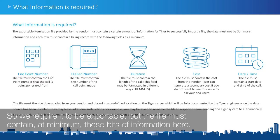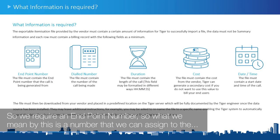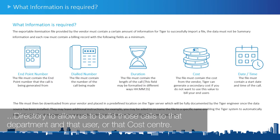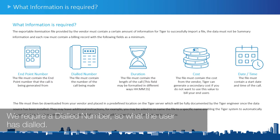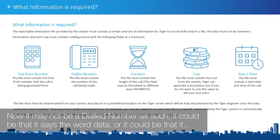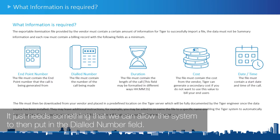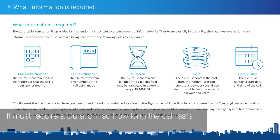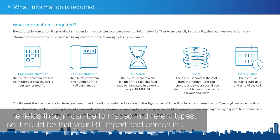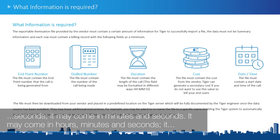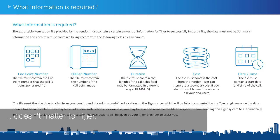We require the file to be exportable and it must contain at minimum these fields. First, we require an endpoint number — a number we can assign to the directory to bill those calls to a department, user, or cost center. We require a dialed number — what the user has dialed, though it could say 'data' or 'MMS' as long as it populates the dialed number field. We also require a duration — how long the call lasted. The duration field can be formatted in seconds, minutes and seconds, or hours, minutes and seconds; Tiger can convert any of these formats.